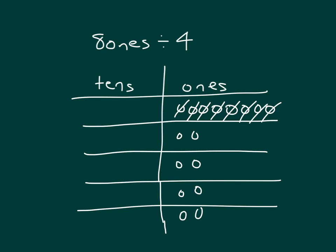So we have eight ones divided by four. Are there any left over? Nope. How many ones are in each of our four groups? There's two. So eight ones divided by four is equal to two ones. And two ones is equal to two in standard form. Eight ones divided by four equals two ones.